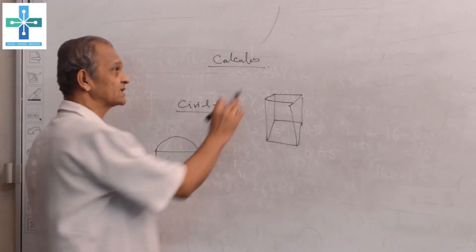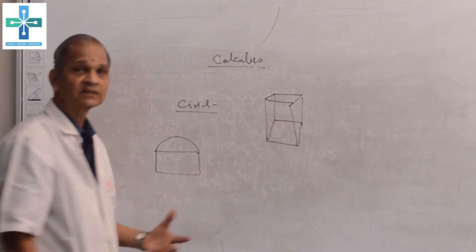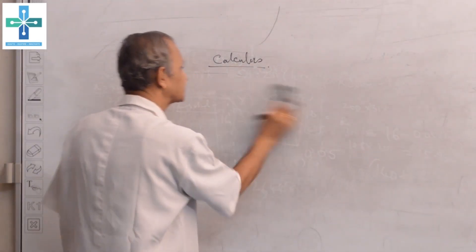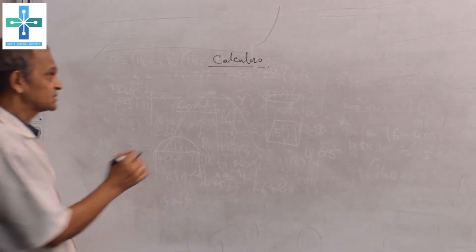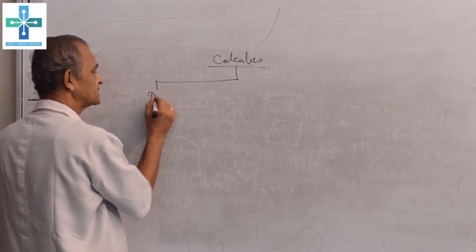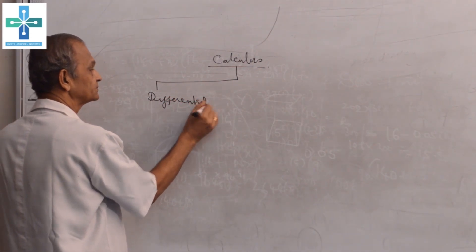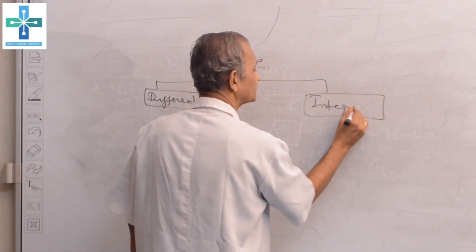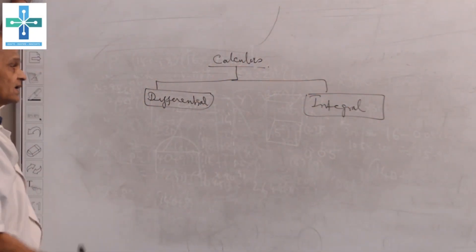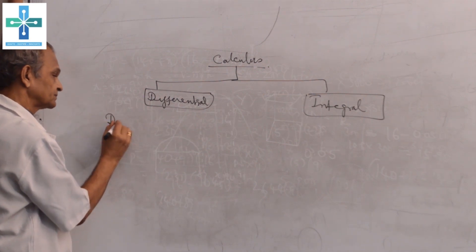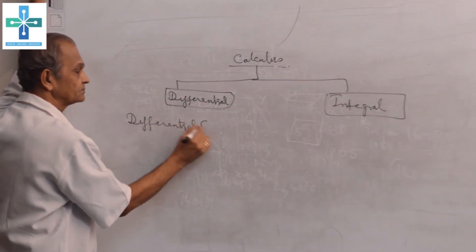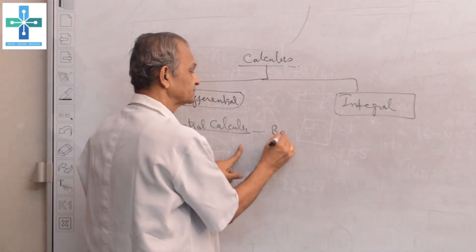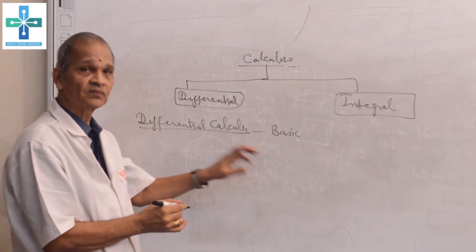Therefore, we have to understand what calculus is and how we are applying it. Even if it is difficult, we have to make our mind to accept and we have to learn it. In our calculus part, we have two major parts: one is differential calculus and integral calculus. In differential calculus we have basic results, how we are finding different formulae.